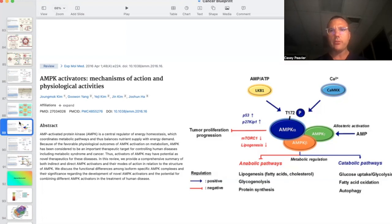So a protein that we have not yet talked about is AMP kinase. And AMP kinase is our body's nutrient sensor. When it's active, it is extremely beneficial, and when it's not active, it can be problematic, especially in cancer. This article says that AMP kinase is a central regulator of energy homeostasis which coordinates metabolic processes and pathways, thus balancing nutrient supply with energy demand. Because of the favorable physiological outcomes of AMP kinase activation on metabolism, AMP kinase has been considered an important therapeutic target for controlling human diseases, including metabolic syndrome and cancer.